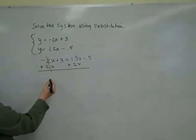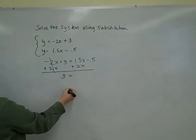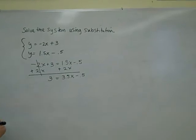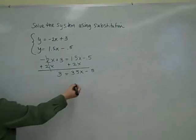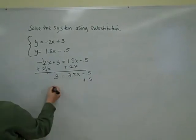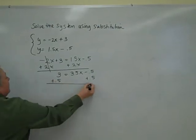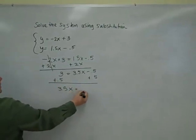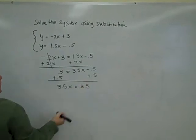I have 0x here. 3 equals 3 and a half x minus one half. I'm going to add a half to both sides.